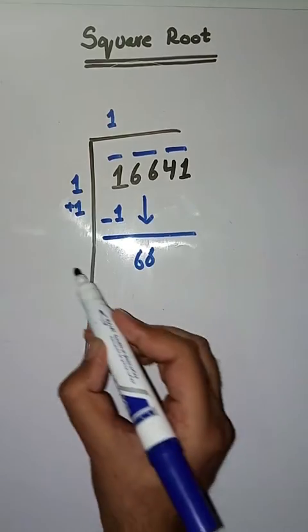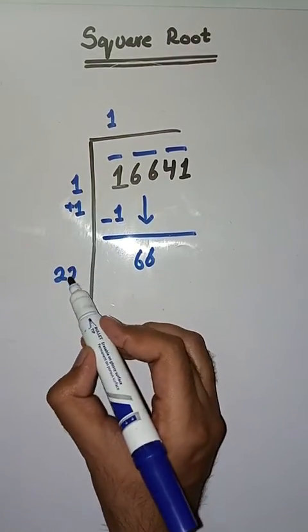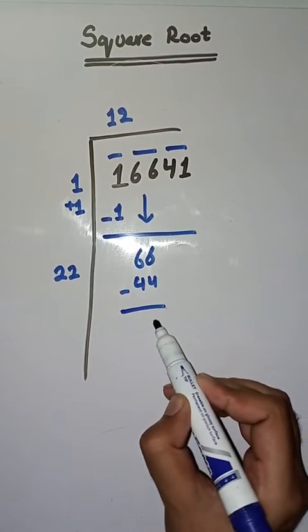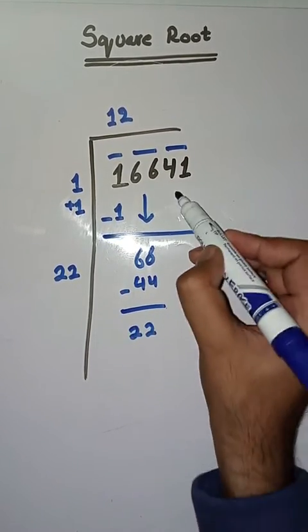Now we will take number 2. Twenty-two times two is forty-four. We subtract and get 22. Next pair is 41. We bring it down. We do 22 plus 2 which is equal to 24.